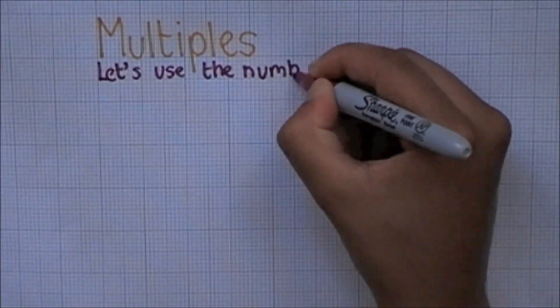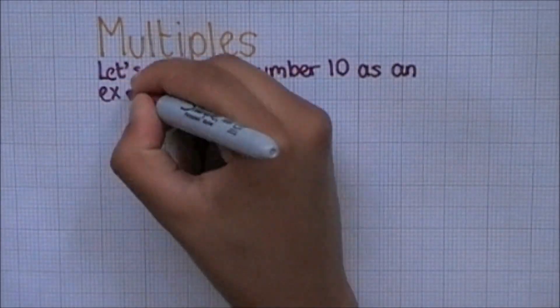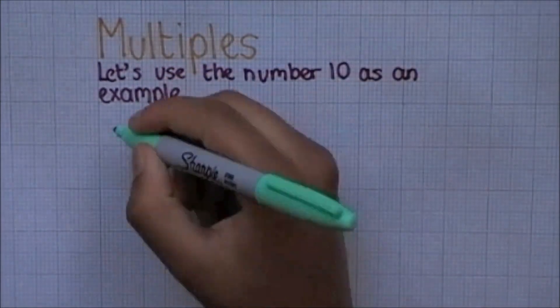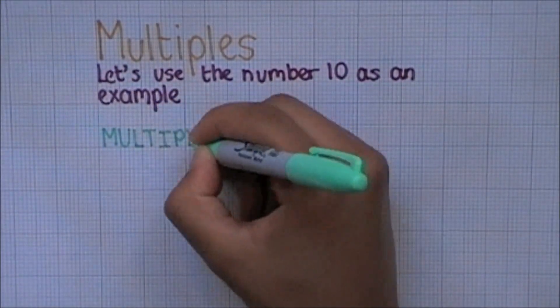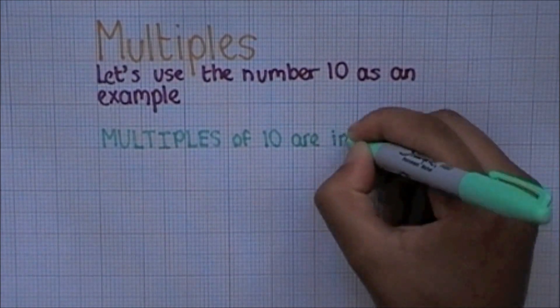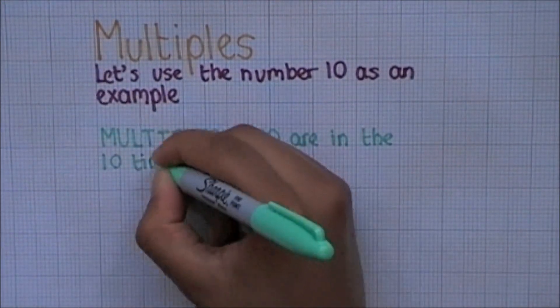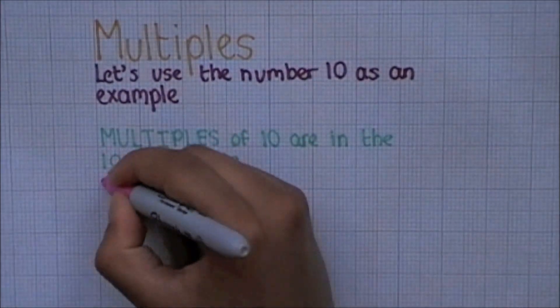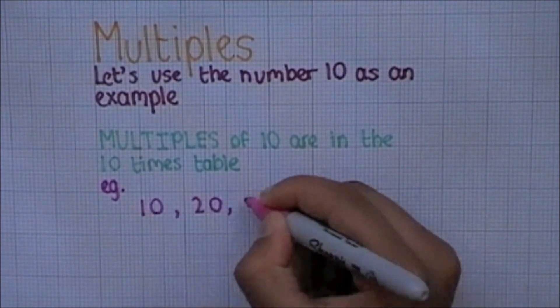Multiples. Now life is always easier when we can use examples to help explain things. So let's use the number 10 to give us some definitions. Multiples of 10 are the numbers in the 10 times table. So, 10, 20, 30 and so on.